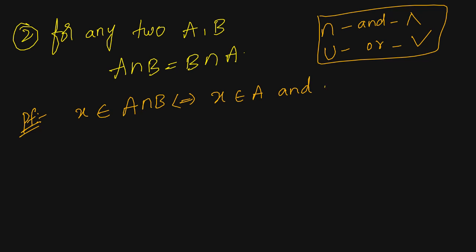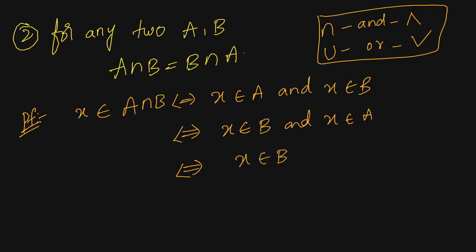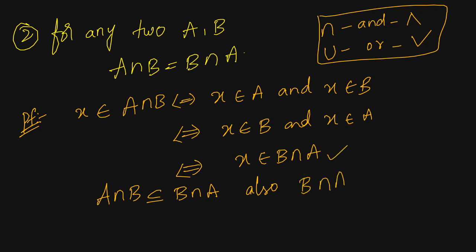I can rewrite this as x belongs to B and x belongs to A, which is nothing but x belongs to B intersection A. So x belongs to A intersection B implies x belongs to B intersection A, meaning A intersection B is a subset of B intersection A. Using the if and only if statement, B intersection A is also a subset of A intersection B.